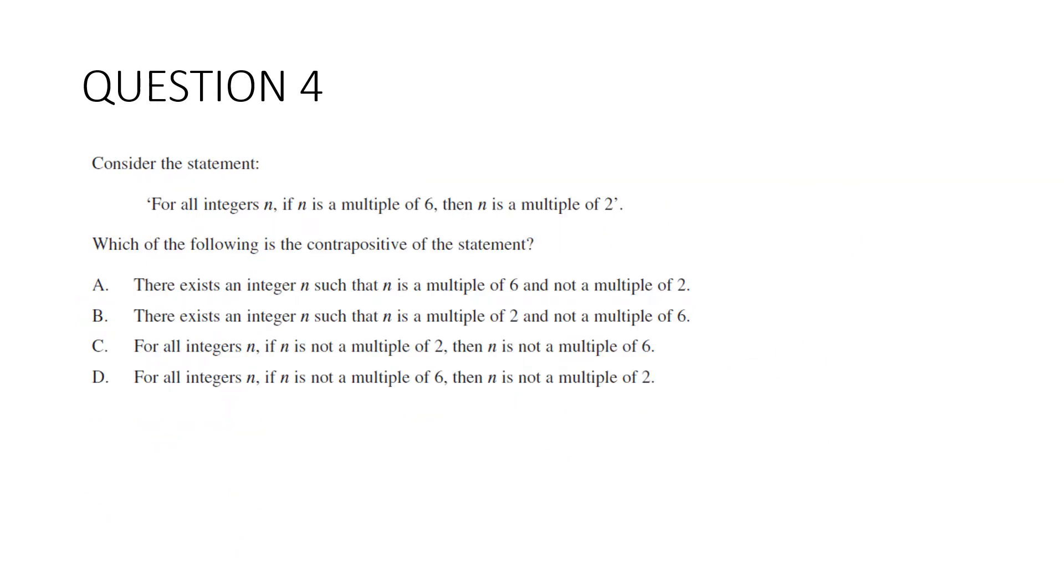Question 4. Consider the statement for all integers n. If n is a multiple of 6, then n is a multiple of 2. What is the contrapositive of the statement? Now, this is a little confusing, this question, because it seems like it's got three parts. If all integers n, if this, then that, but it's actually going to go to 2. This here is the premise. And this is the consequence. So remember, with the contrapositive, we want to negate the consequence. And then it will imply the negation of the premise. So what we want is this. If n is not a multiple of 2, then n is not a multiple of 6. And then this part here will be in there somewhere. So it's not a, it's not b. For all integers n, if n is not a multiple of 2, then n is not a multiple of 6. It is c.